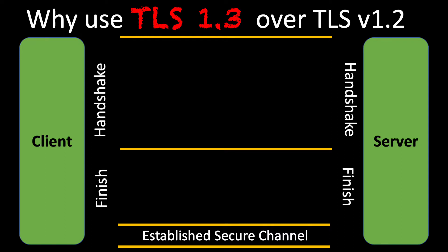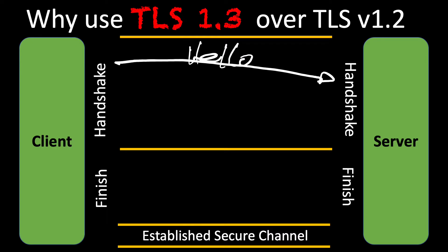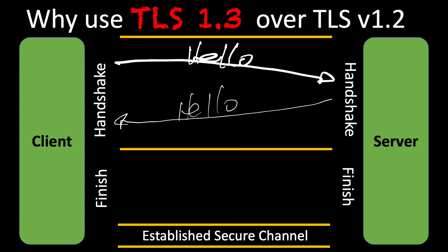What we initially do is the client actually sends that hello packet over. In TLS 1.3, one of the main things is that it's a single round trip — as opposed to two round trips in 1.2, we actually have a single round trip. We have a hello from the server and a hello to the client — that's that one round trip.